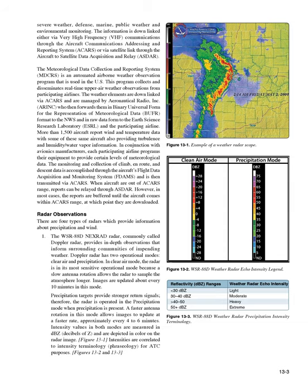Telephone Information Briefing Service (TIBS), provided by FSS, is a system of automated telephone recordings of meteorological and aeronautical information. TIBS provides area and route briefings, airspace procedures, and special announcements. The recordings are automatically updated as changes occur. It is designed to be a preliminary briefing tool and is not intended to replace a standard briefing from an FSS specialist. The TIBS service can only be accessed by a touch-tone phone, and the phone numbers are listed in the Chart Supplement US.